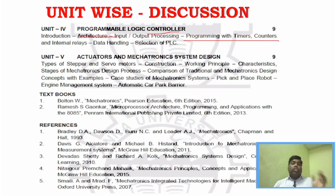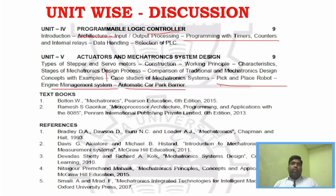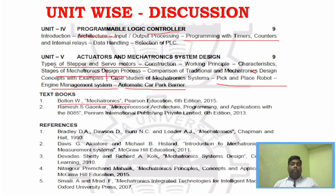Unit 5 has many questions in case studies. The three case studies to focus on are: pick and place robot, engine management system, and automatic car barrier system. Also important are stepper motor and the stages of mechatronics design process. Part B and Part C questions from Unit 5 are very important.